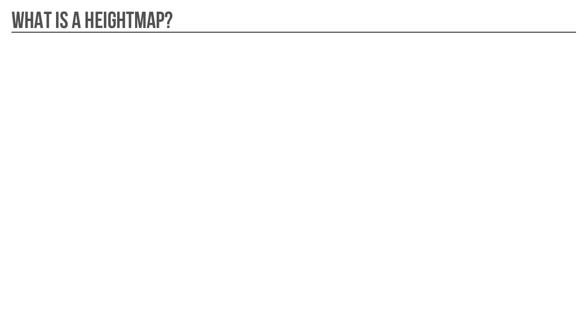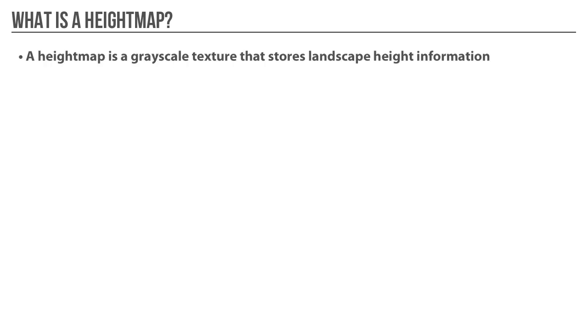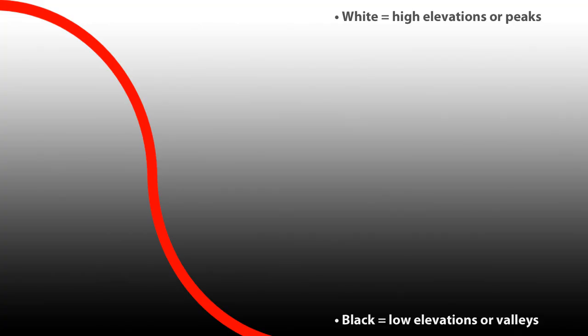What is a height map? A height map is a grayscale texture that stores landscape height information. The black color in your height map represents low elevations, or valleys. The white color represents high elevations, or peaks. And the gray color is everything in between.